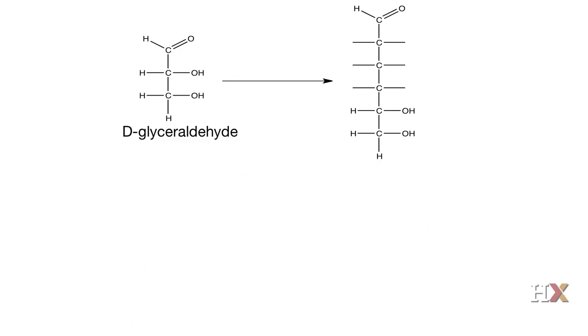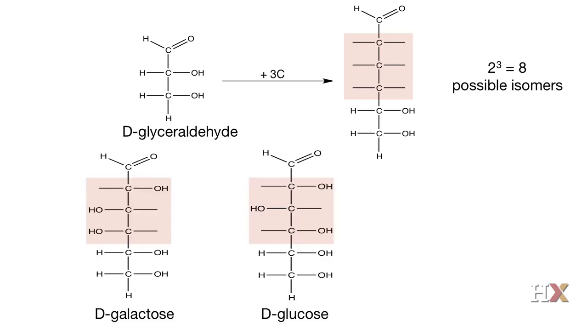We can try to figure out the diversity of monosaccharides in living organisms by focusing on the diversity of hexoses in nature. In fact, there is a limited number of hexoses that exist in cells, and most of them belong to the D series. Starting with glyceraldehyde — three carbons — and adding three carbons to create a hexose, we find eight possible D-hexoses. Out of these eight possibilities, only three are extremely common: D-galactose, D-glucose, and D-mannose.